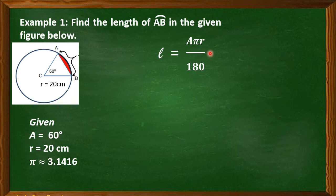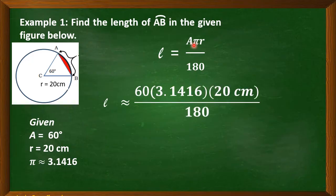And I derive it specially to my dear students to shorten the solution. So, arc length is equal to substitute, A is 60. Then, pi is 3.1416 multiplied by R which is 20 cm.